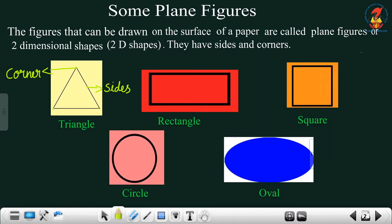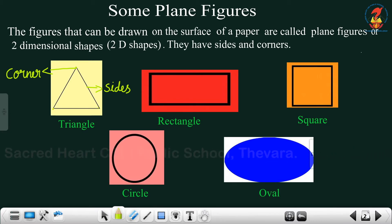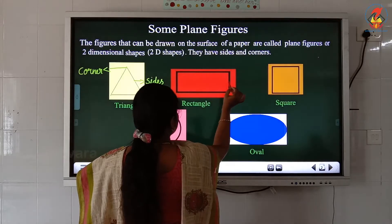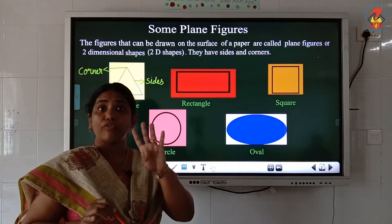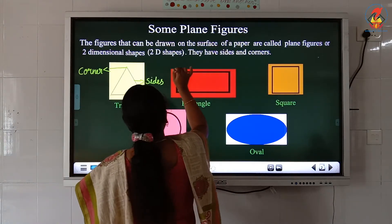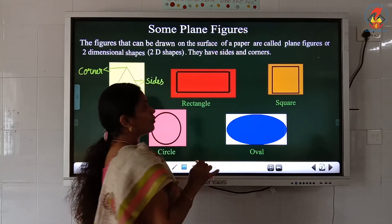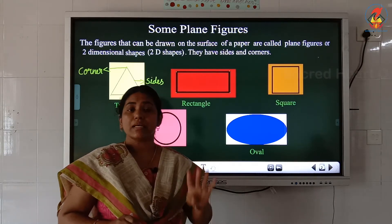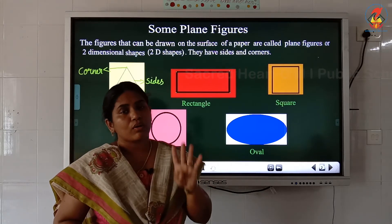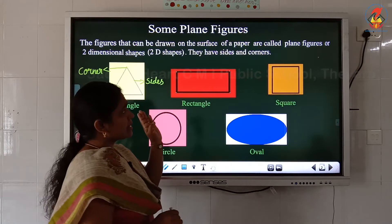The next shape is called a rectangle — spelling: R-E-C-T-A-N-G-L-E. Let's count the sides of a rectangle: one, two, three, four — four sides. And the corners: one, two, three, four — four corners. So a rectangle has four sides and four corners.